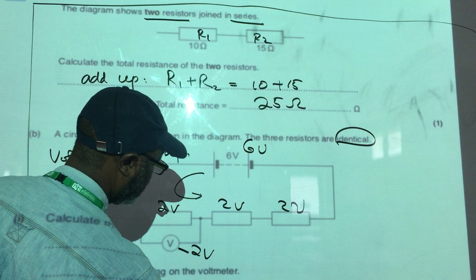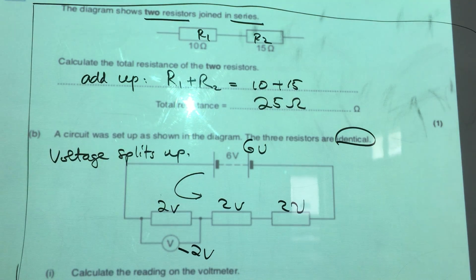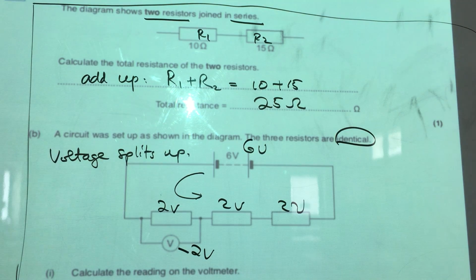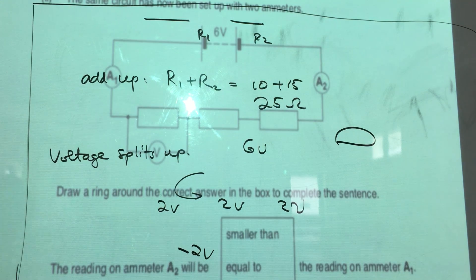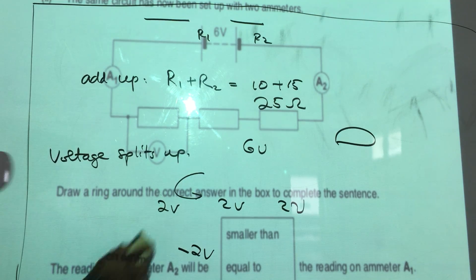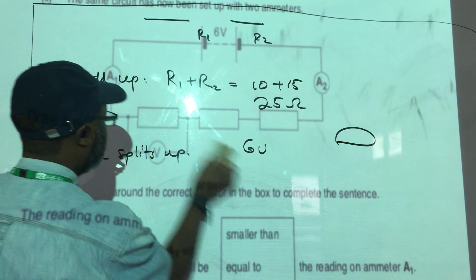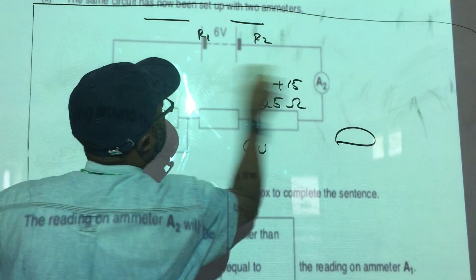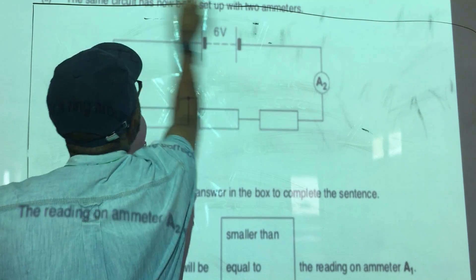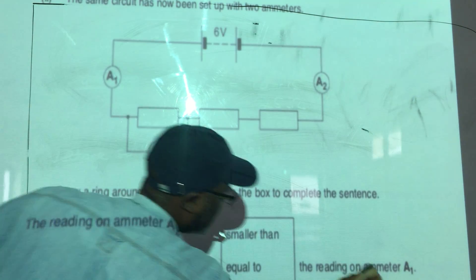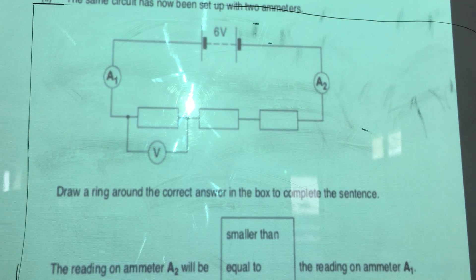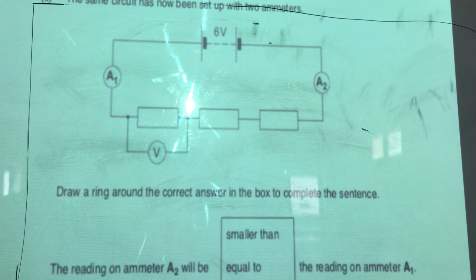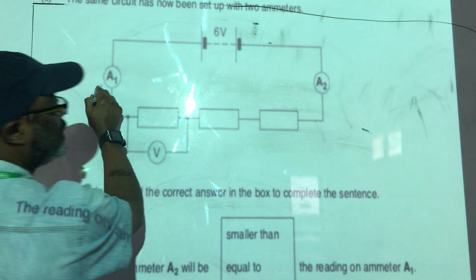And that is how you do a question like that. Now the second part of this question is testing our understanding of current in a series circuit. If you put an ammeter here to measure the current, and you put an ammeter there to measure the current, or even put another ammeter here to measure the current...